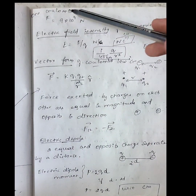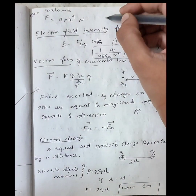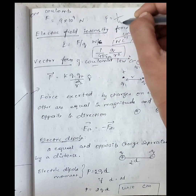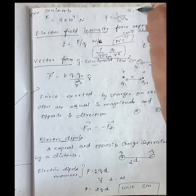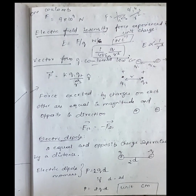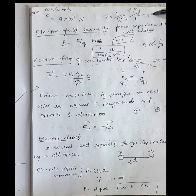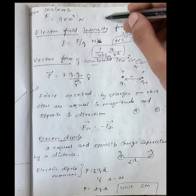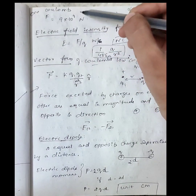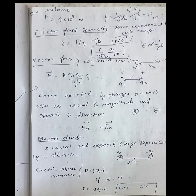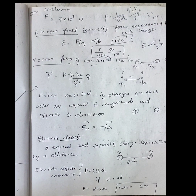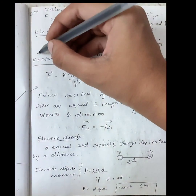One coulomb is defined using the force formula: F = (1 / 4πε₀) × (q₁q₂ / r²). If both charges are 1 coulomb and the distance between them is 1 meter, the force equals 9 × 10⁹ newtons. This defines the magnitude of one coulomb of charge.